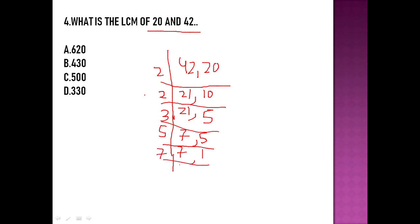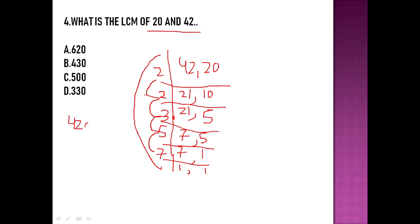We divide by 7: 7 times 7 is 7, and 5 times 1 is 5. Then divide 7 by 7 to get 1. Now multiply: 7 times 5 is 35, 35 times 3 is 105, 105 times 2 is 210, and 210 times 2 is 420. So 420 is the answer, which corresponds to option E.